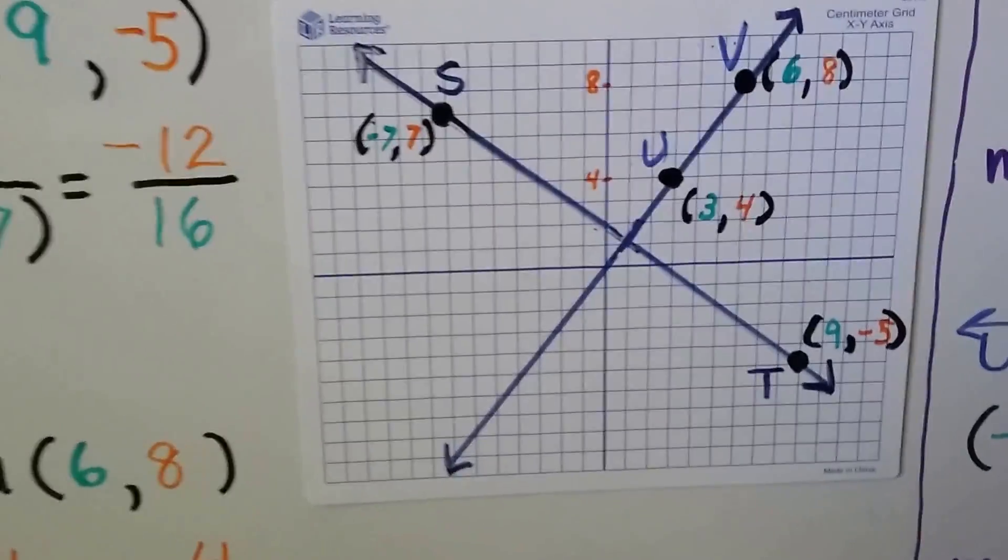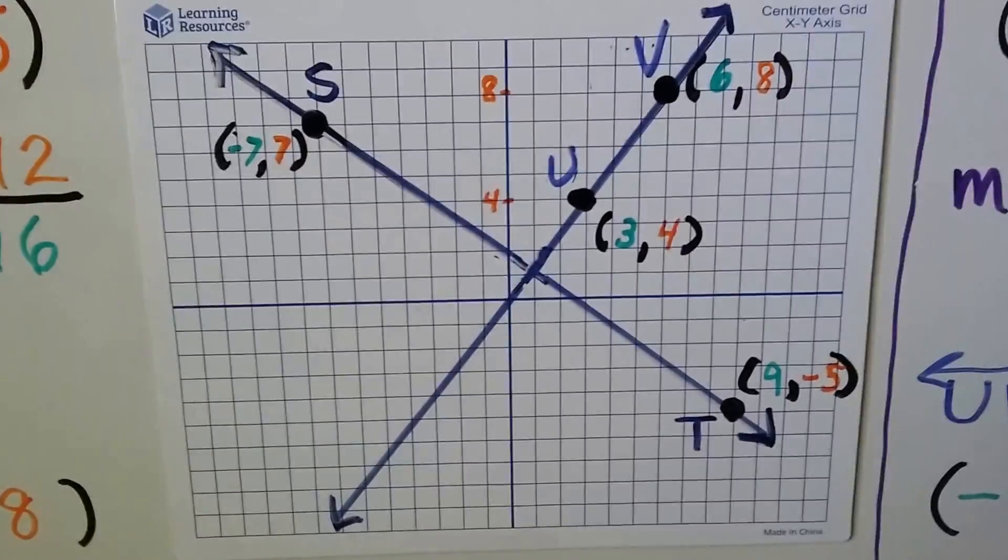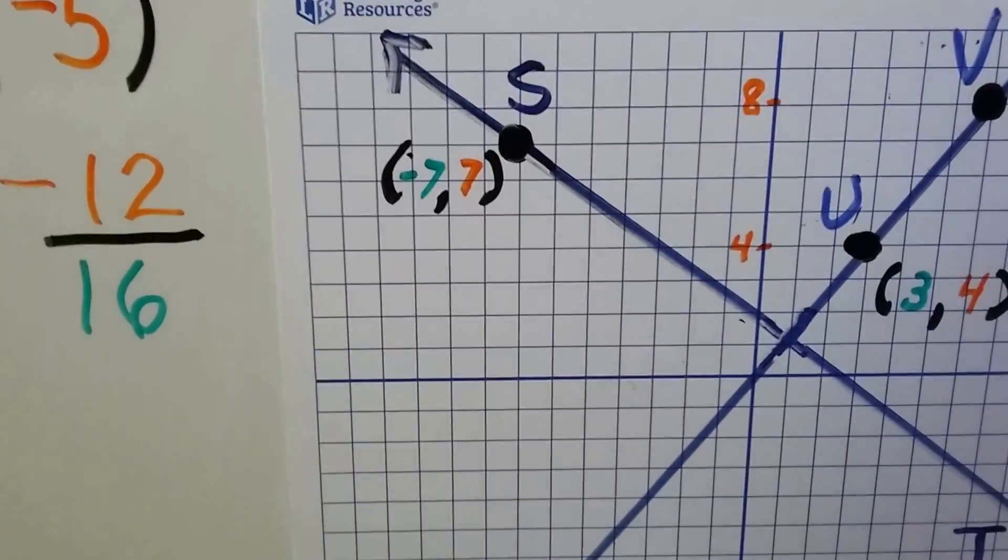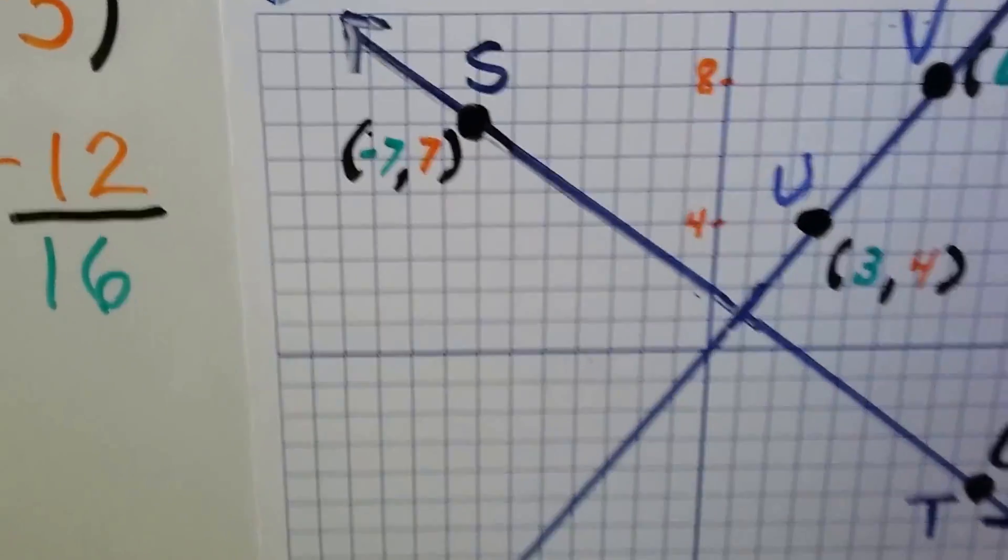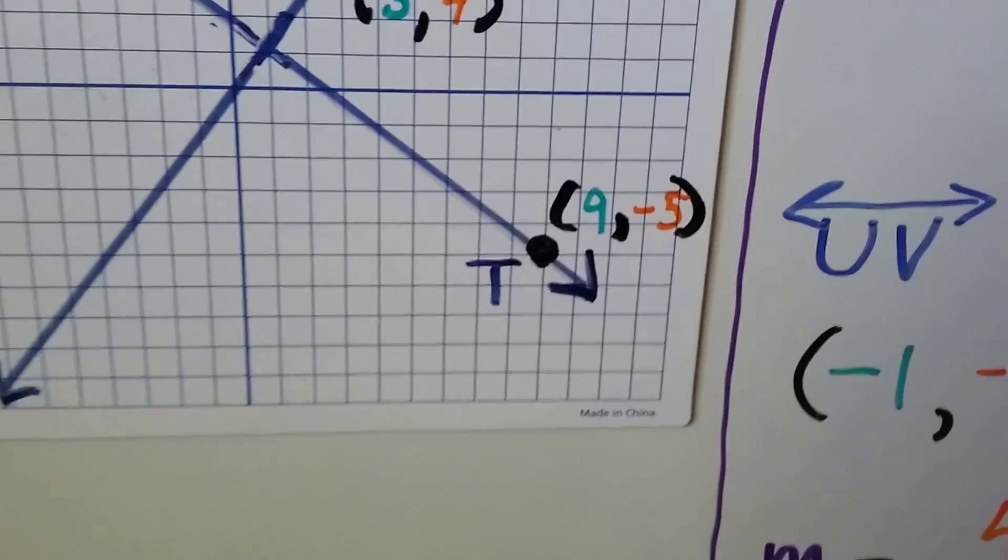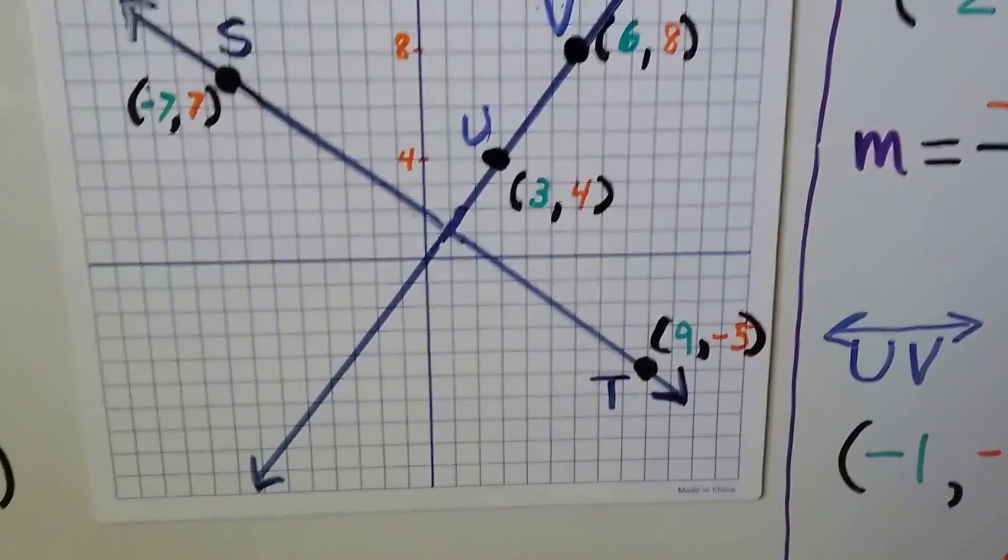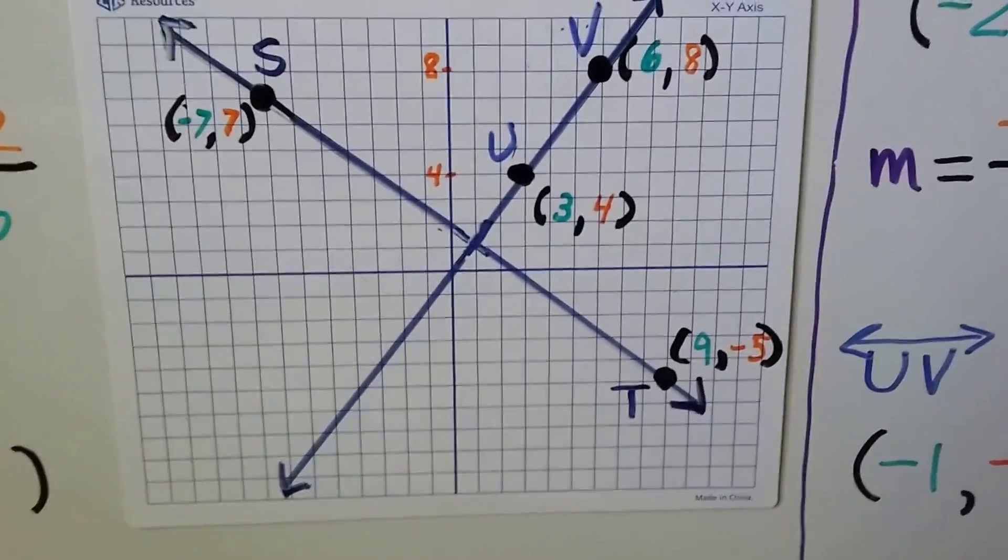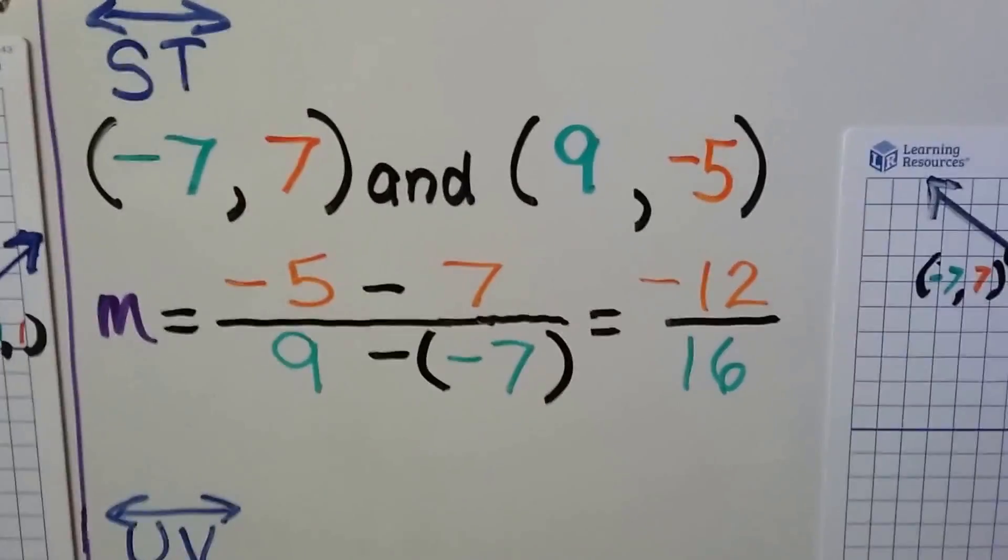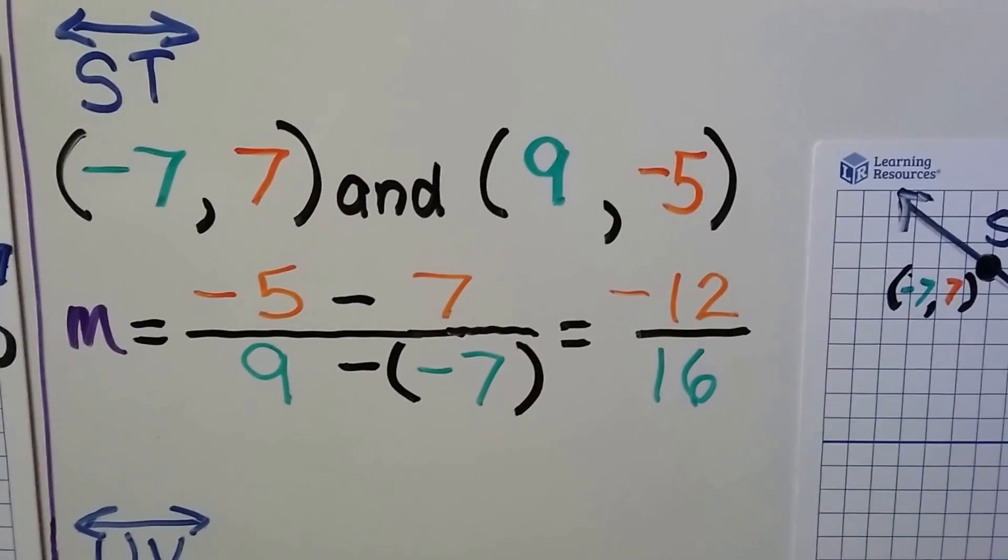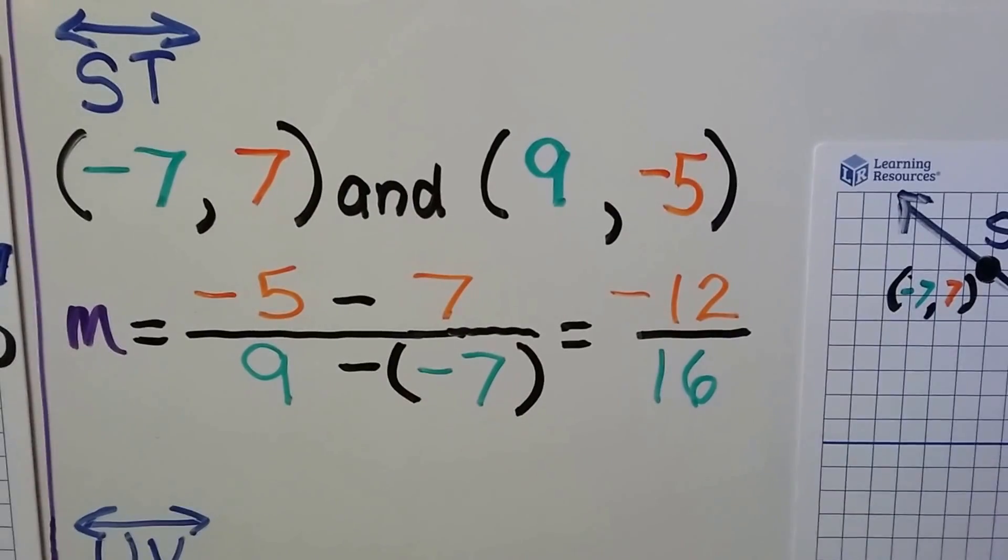Take a look at this. We have line ST and we have line UV. The coordinates for S are -7 for x, 7 for y. For T, it's 9 for x and -5 for y. So that means we have -5 - 7 over 9 - (-7). -5 - 7 is -12. And 9 minus a negative 7, we add the opposite, we get 16. So we have -12/16.